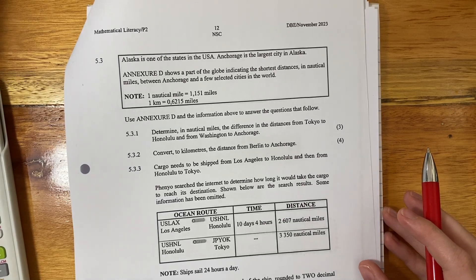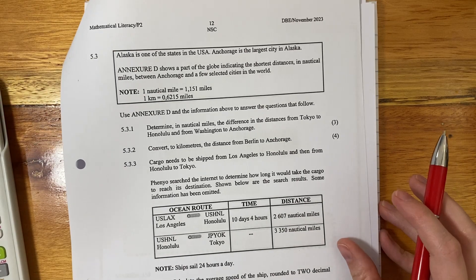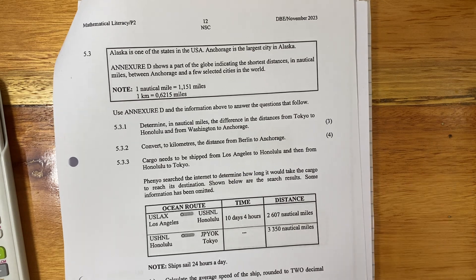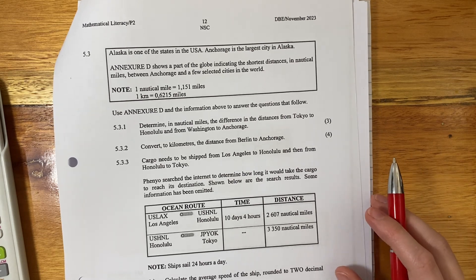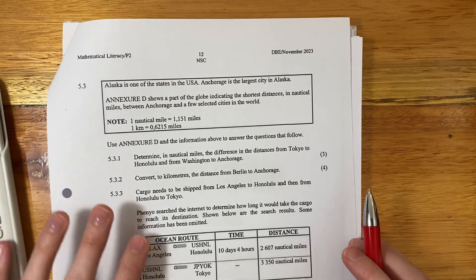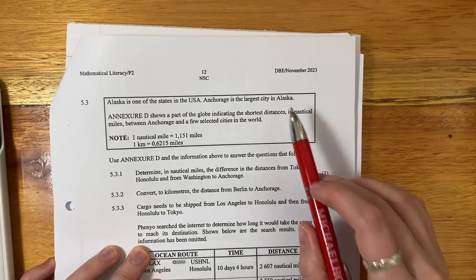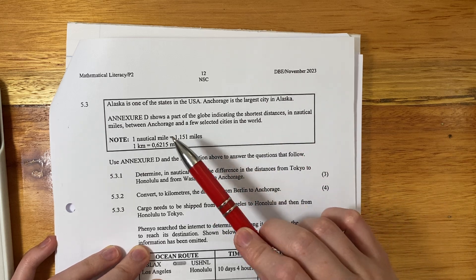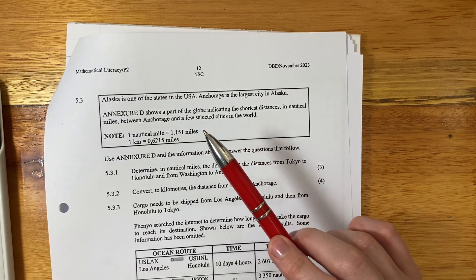All right, let's do question 5.3. This is the last question of the paper and so we expect some challenges. Alaska is one of the states in the USA. Anchorage is the largest city in Alaska. Annexure D, whenever you see that, you go find your annexure.